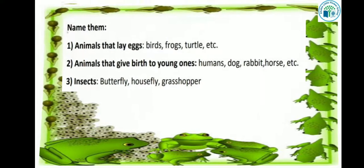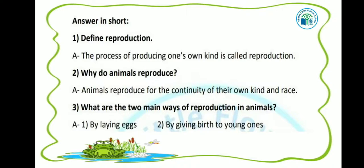Now kids, our next topic is answer the following questions. First question: define reproduction. Reproduction किसे कहा जाता है? The process of producing one's own kind is called reproduction. अपने जैसे ही दूसरे जीव को जन्म देना, उसे reproduction कहा जाता है. Why do animals reproduce? Animals reproduce for the continuity of their own kind and race. Reproduction की मदद से ये जो continuity है, वो चलती ही रहती है.